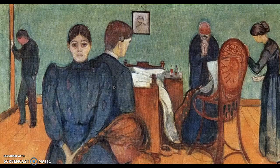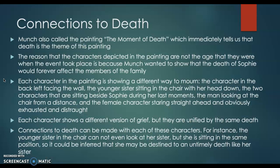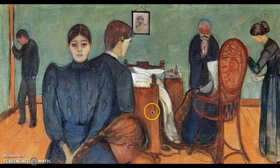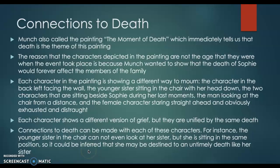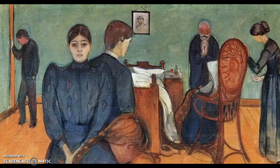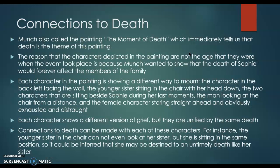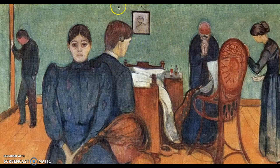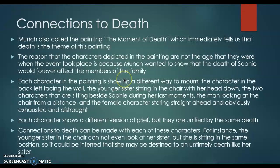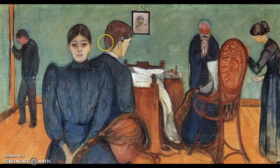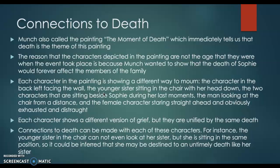Each character in the painting is showing a different way to mourn. The character in the back left facing the wall is actually believed to be Munch himself. The younger sister is sitting in the chair with her head down. The two characters sitting beside Sophie during her last moments are here as well. The man looking at the chair from a distance is believed to be her father. And finally, the female character staring straight ahead, obviously exhausted and distraught, believed to be her mother. You can see the bags under her eyes that show exhaustion.